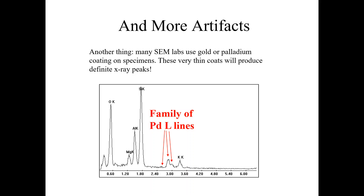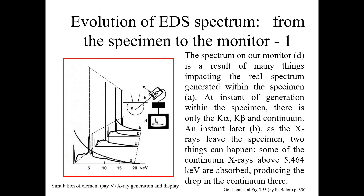Another issue: many labs use a gold or palladium coating on the specimen. This very thin coat will produce definite X-ray peaks. In order to reduce background noise and have a clearly visible peak, some labs utilize EDS with such coatings. They do gold or palladium coating on their specimen, and with the help of that coating they can produce excellent results.